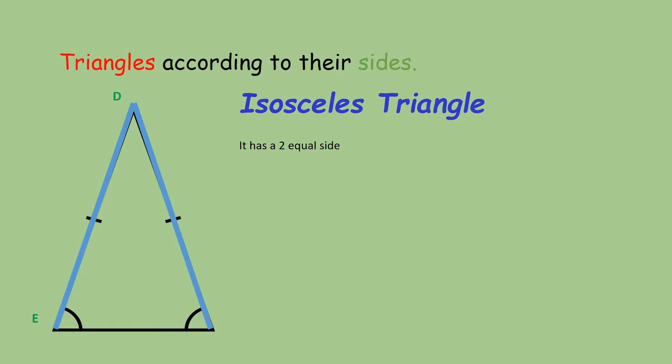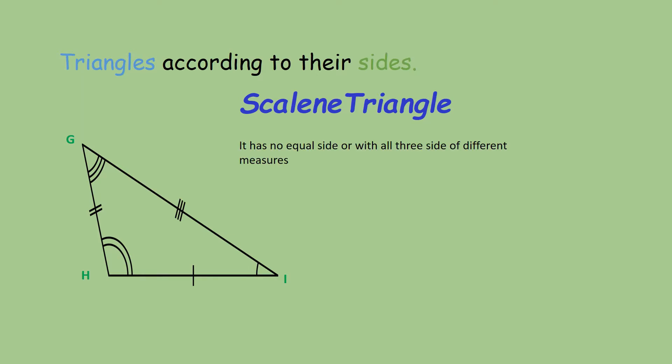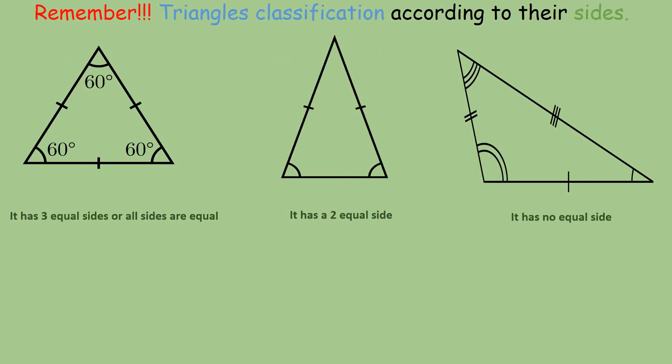triangle DEF is an example of an isosceles triangle. And this picture is the last example of a triangle according to their sides. We call it the scalene triangle because it has no equal sides, or all three sides are of different measure. So triangle GHI is an example of a scalene triangle.